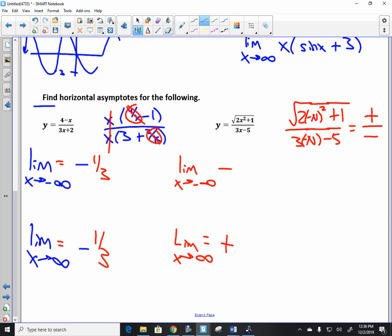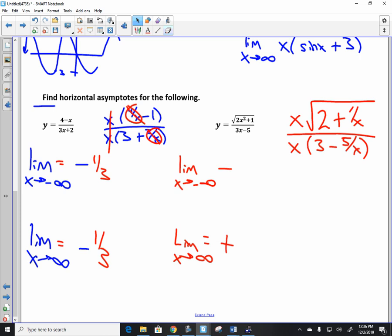Let's find out what it is. What do you factor out at the top? x squared. And when you bring that x squared out in front of the radical, what does it become? It becomes x times the root of two plus one over x. At the bottom, I factor out x, and I'm left with three minus five over x. You can see that the x's cancel. It's zero here, and you get zero here. And so you get the root of two over three, root of two over three. You can see in one situation it's negative, and the other situation it's positive.